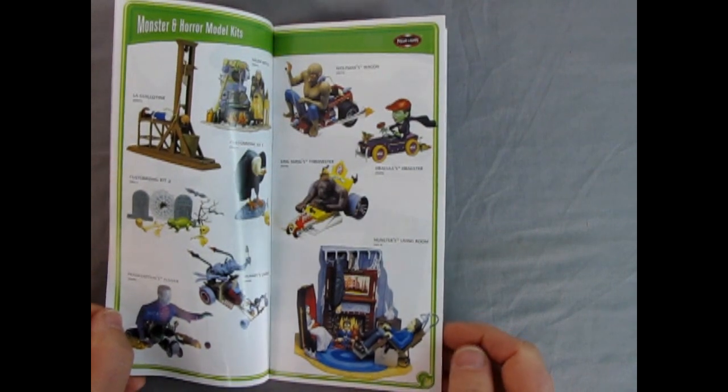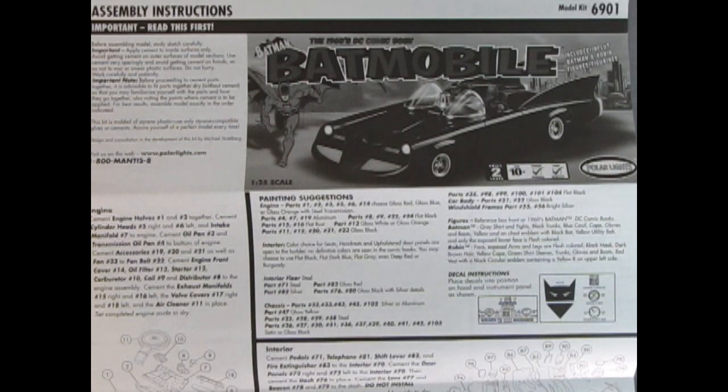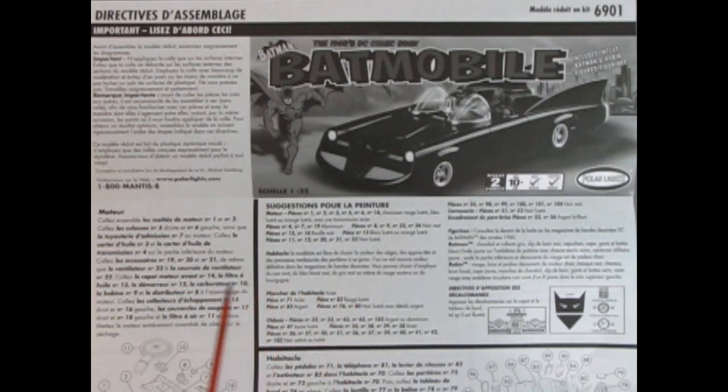I like to go over the instruction sheet first in these model kit unboxing videos and that's just so that you can see how the model goes together on paper and if you're actually missing these instructions, it's always good to have a backup, which is what I try to provide in these videos. The Polar Lights instructions come in English on the front and French on the back if you're living in French-speaking Canada.